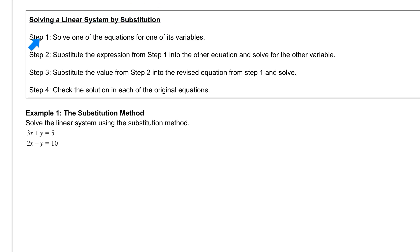Here are the four steps that you need. Number one, you're going to solve one of the equations for one of its variables, either x or y, or whatever other two variables are given to you. Step two, you're going to substitute the expression from step one into the other equation and solve for the other variable. Step three, you're going to substitute the value from step two into the revised equation from step one and solve. And finally, step four, you're going to check the solution and make sure it works.